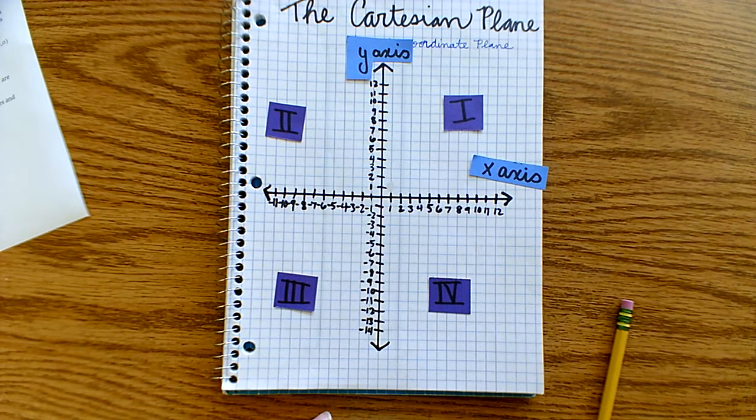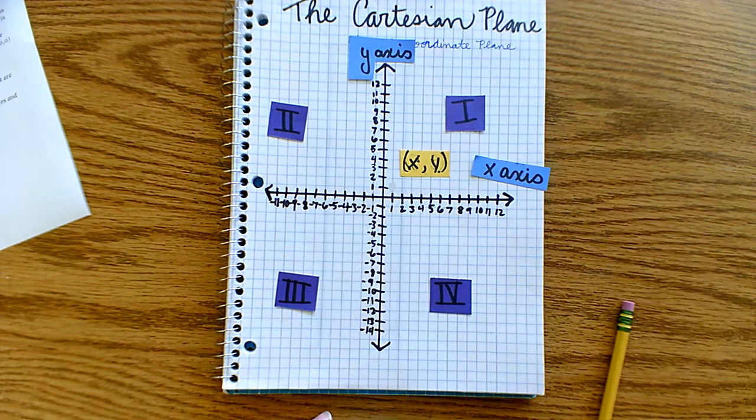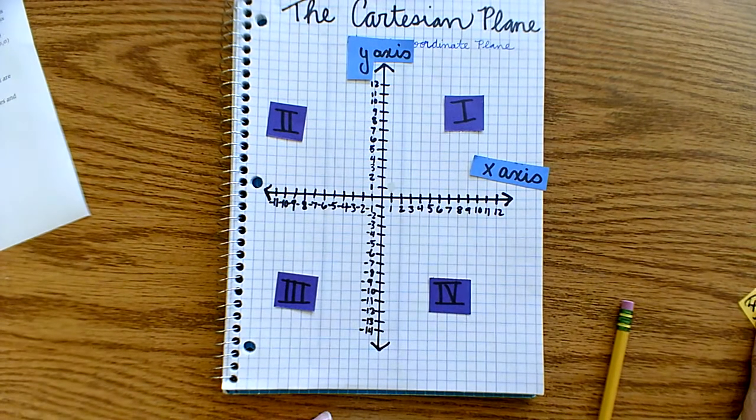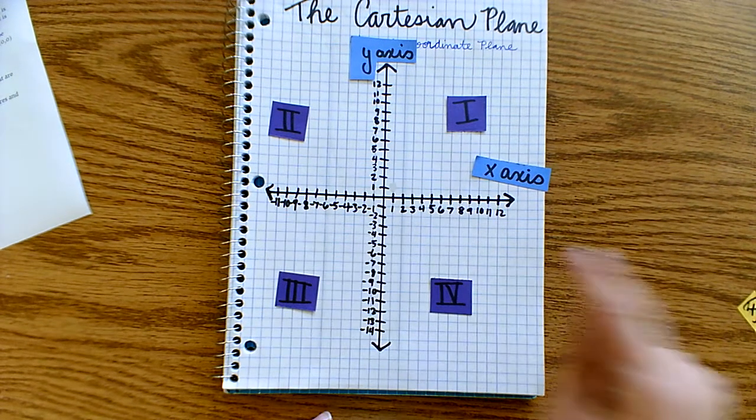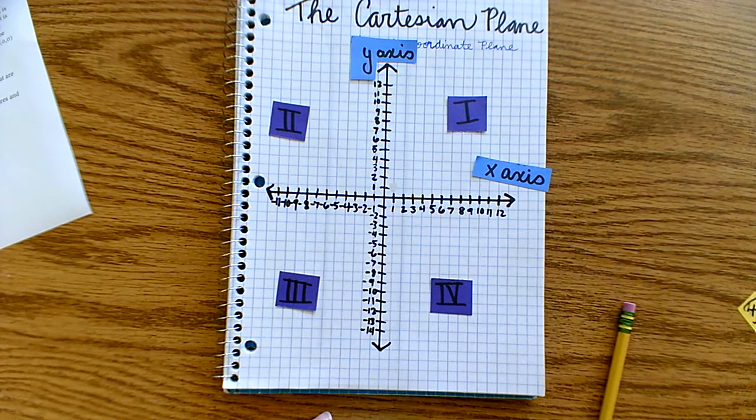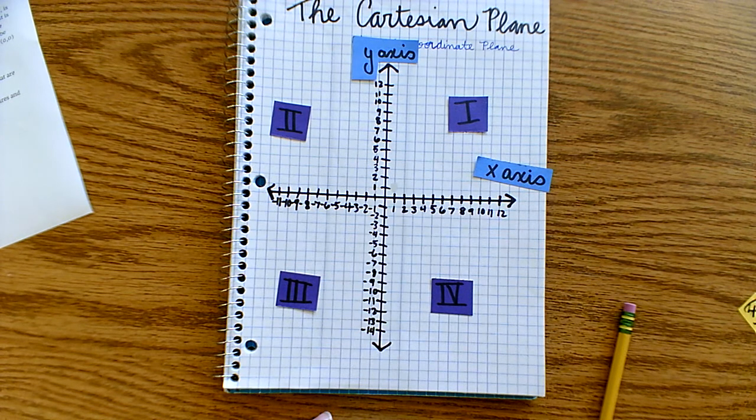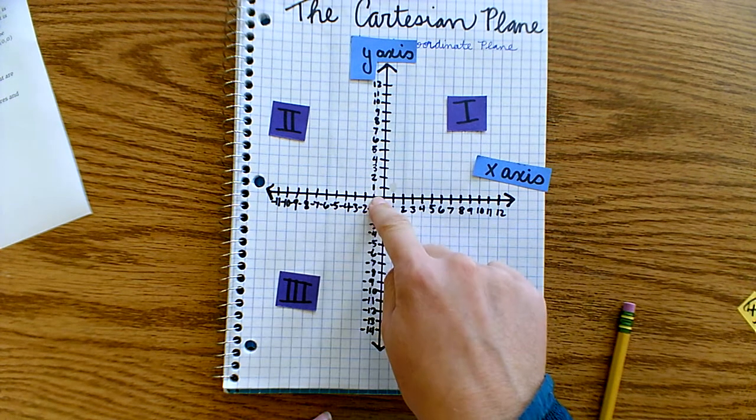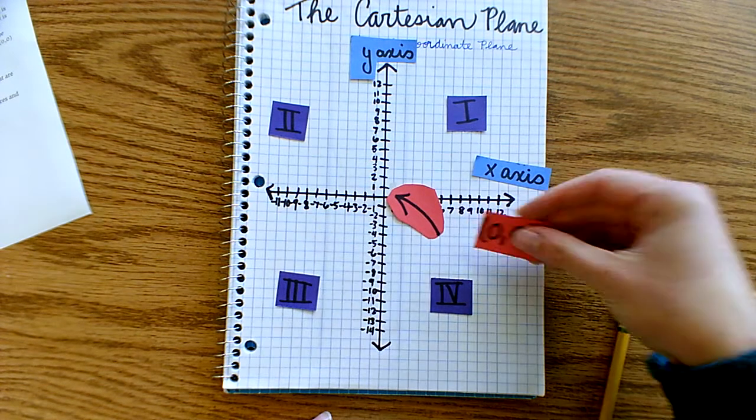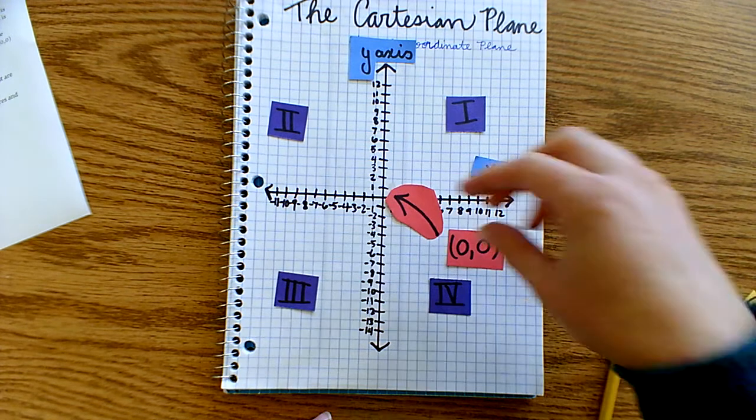Now, anytime we describe those coordinate points, we follow the same pattern: x comma y. The first value is the x-coordinate, which describes where on the x-axis the point is located. But by using the Cartesian coordinate system, any point on the plane can be described using a pair of coordinates, even where the two lines intersect. That point right here has a special name, 0 comma 0.